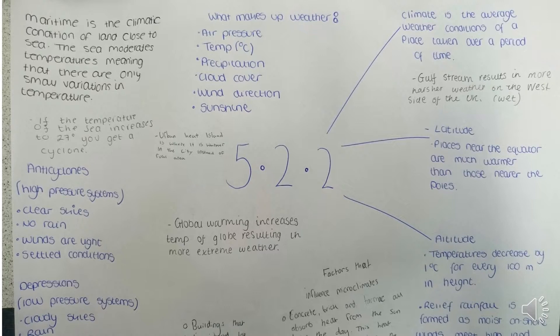Climate is the average of these conditions. You wouldn't say the climate outside today is sunny — you would describe climate as what conditions are like over a long period of time. For example, you might say the climate of the south of Spain is hot and sunny. That's the general climate, but the weather there today might actually be rainy, because climate is an average over a long period of time.